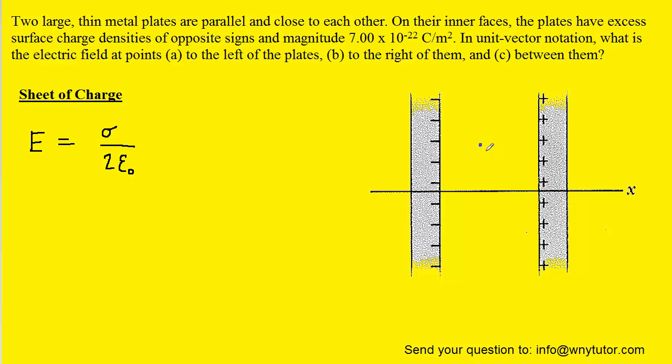And finally, in part C, between the plates, the electric field will point towards the negative plate. It will also point away from the positive plate. So in this case, they're both pointing to the left.